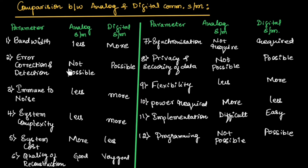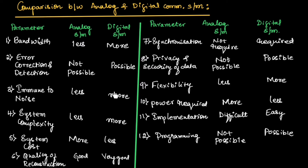In case of the analog system, error correction and detection is not possible, and in case of the digital system, error correction as well as detection is possible. The analog systems are less immune to noise, but the digital systems are more immune to noise.